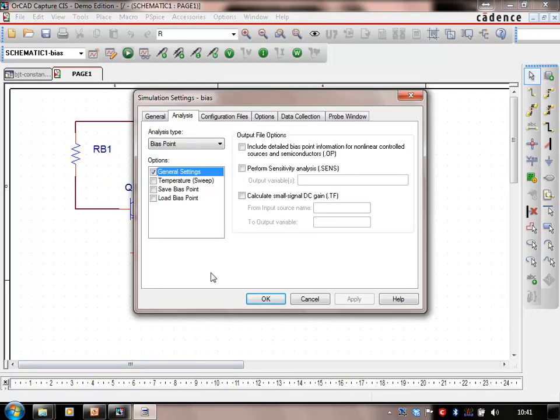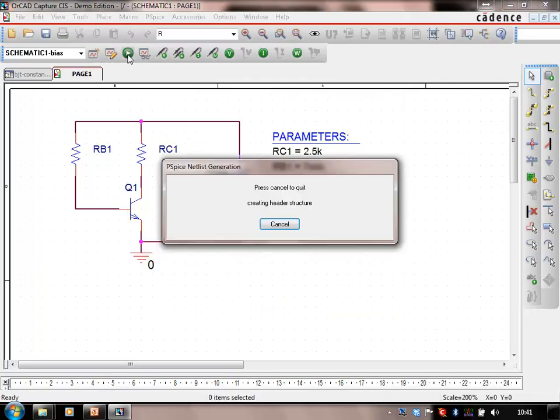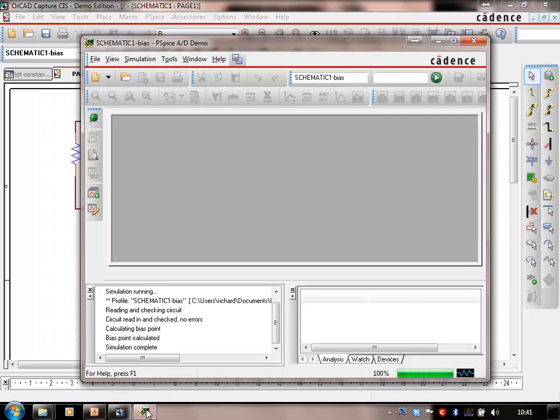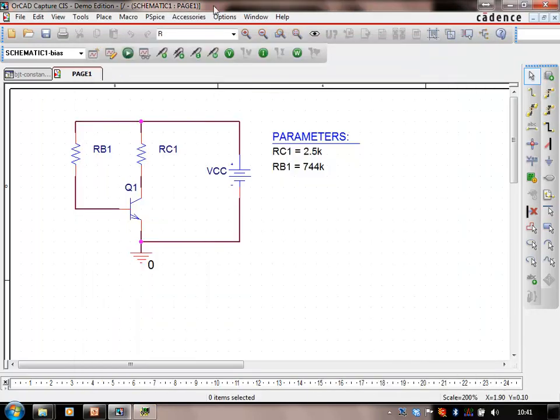If I do a quick simulation, I'm popping up my simulation window. It pops up behind for some reason. I'm doing only a bias point, finding out where it's set. Click OK, click simulate. The simulation window is behind the screen again as well, but if I now just turn on the voltages and turn on the currents.